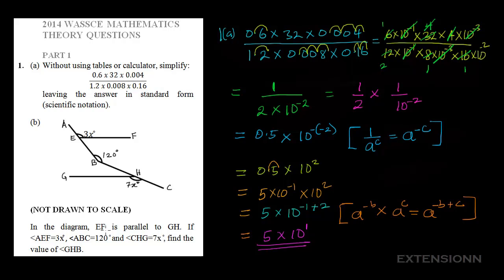Now part B says: in the diagram, EF is parallel to GH. If the angle AEF is 3x degrees, and the angle ABC is 120 degrees, and the angle CHG is 7x degrees,